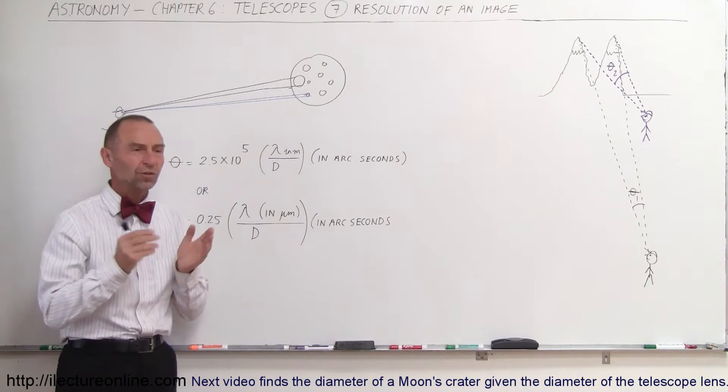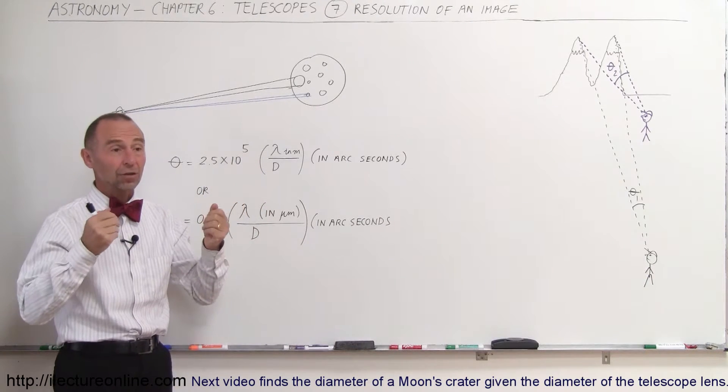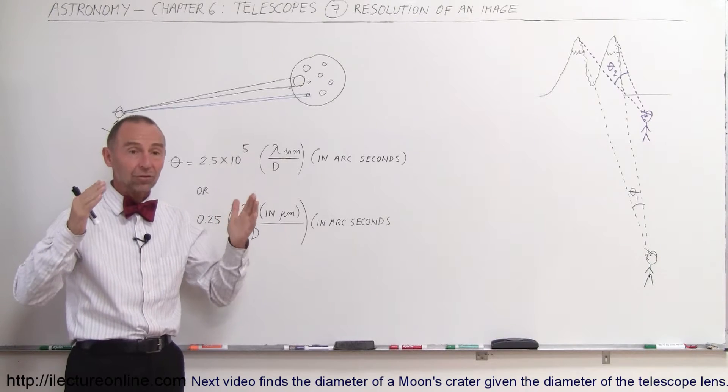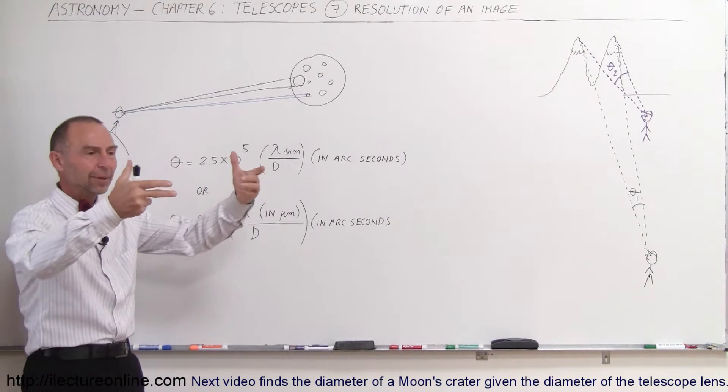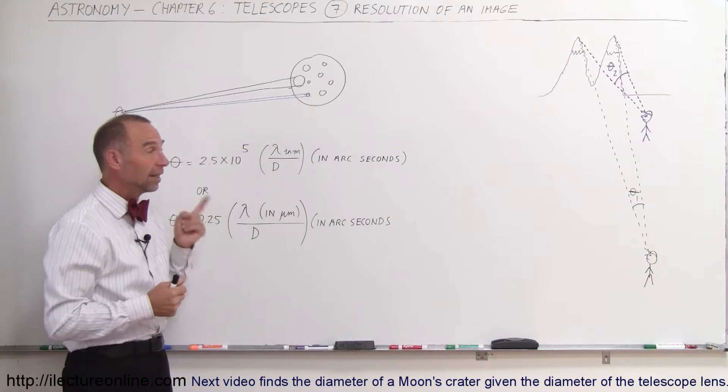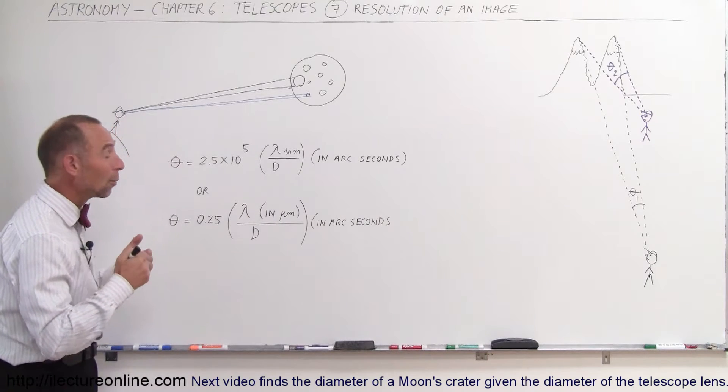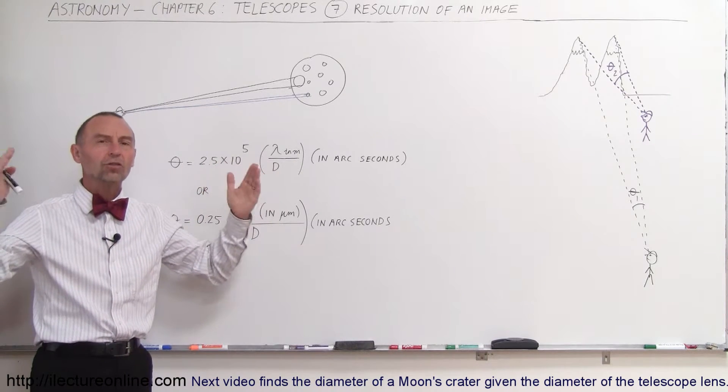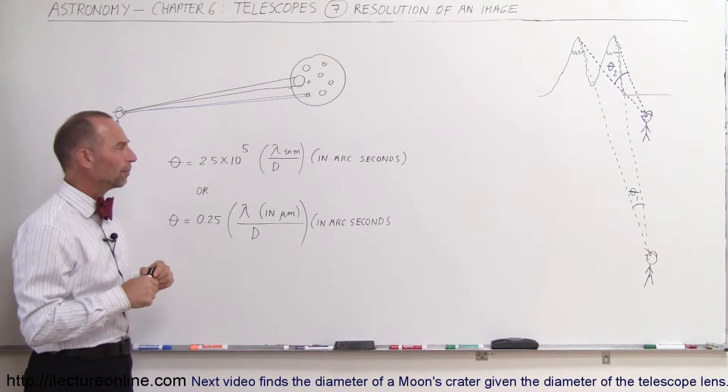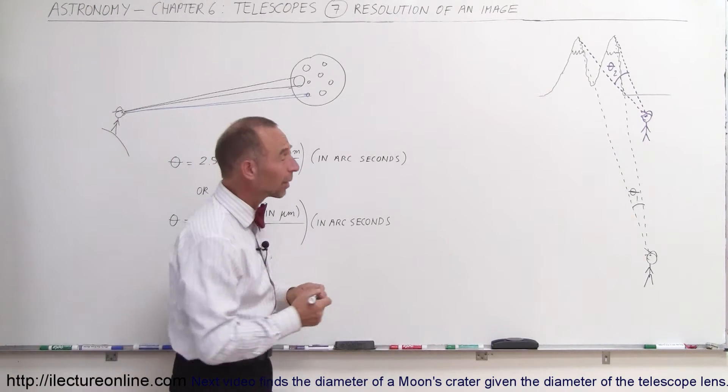Remember, in the previous video, we saw how important it is to have a very large collecting area to collect photons, either with the collecting lens called the objective or the objective mirror. The ability to take in enough light to be able to see the image is really important. But in addition to that, we want to see the detail on the image. And in order to see the detail, we also require as large a telescope as possible. It all comes down to the size of the telescope. Size is everything when it comes to telescopes.